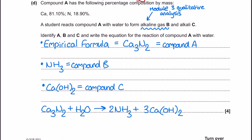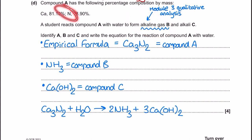Moving on to part D — there's a bit of qualitative analysis and module 3 group 2 chemistry here, with some crossover and moles work for empirical formula. Compound A has the following percentage composition by mass, so we're doing an empirical formula calculation. A student reacts compound A with water to form an alkaline gas B and alkali C. Straight away, with nitrogen and water involved, I'm thinking the alkaline gas is likely to be ammonia — linking to the qualitative analysis topic where an alkaline gas is released in testing for ammonium ions. We're asked to identify A, B, and C, and write the equation for the reaction of compound A with water.